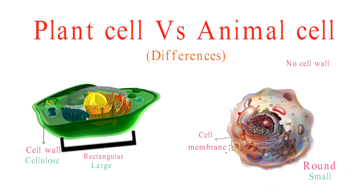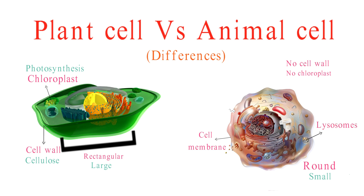One of the most significant distinctions is the presence of chloroplasts in plant cells, responsible for photosynthesis. Animal cells lack these green powerhouses. Animal cells are equipped with more lysosomes, crucial for cellular waste disposal, while plant cells typically have fewer or none.